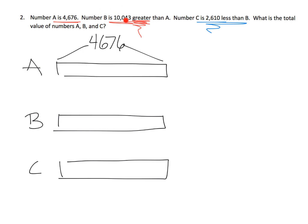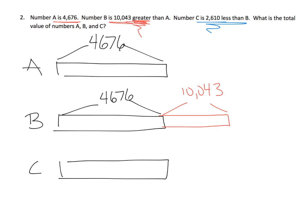Now, number B is 10,043 greater than A — that's the kicker right there. A lot of students are going to misread it and just say number B is 10,043. But no, it's 10,043 greater than A. So that tells us we need to extend B by 10,043. That part of the tape is 4,676, and the extension is 10,043. Note that I'm not trying to be proportional — the purpose of these tape diagrams is just to represent the problem; it doesn't have to be totally proportional.